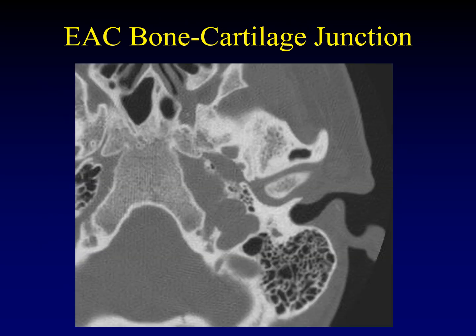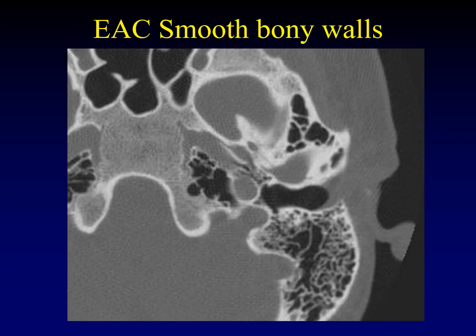Starting with the external auditory canal: it is a thin tube connecting the outside world to the tympanic membrane. The lateral half has walls composed of cartilage, and the medial half has walls composed of bone. The transition point is called the bone-cartilage junction, an important anatomic reference point. The bony portion should have very smooth, well-defined walls — the presence or absence of erosions is critical to the differential diagnosis of lesions in this location.